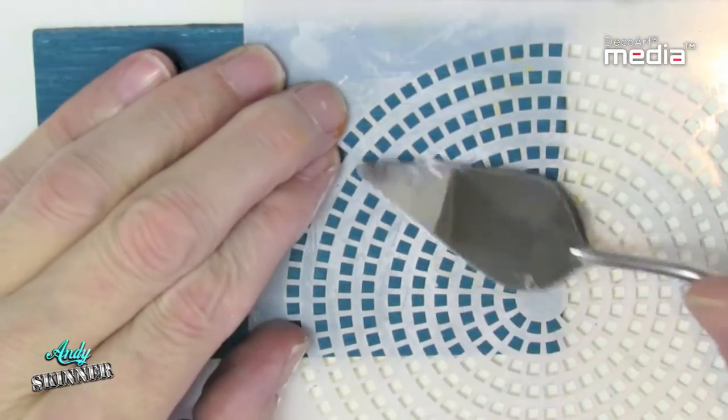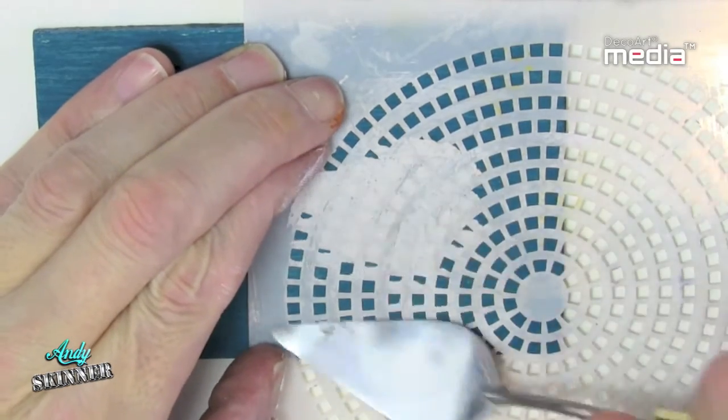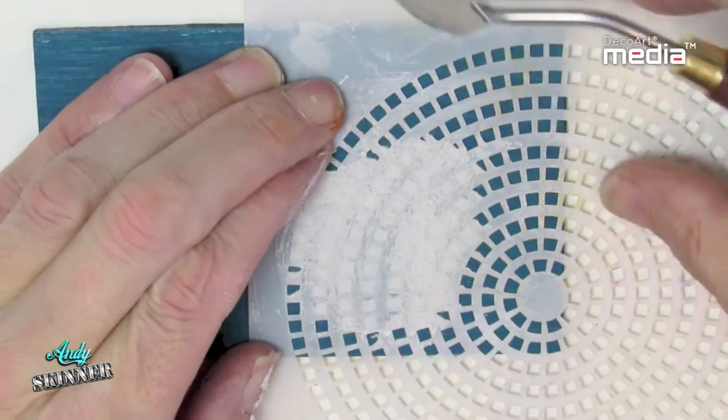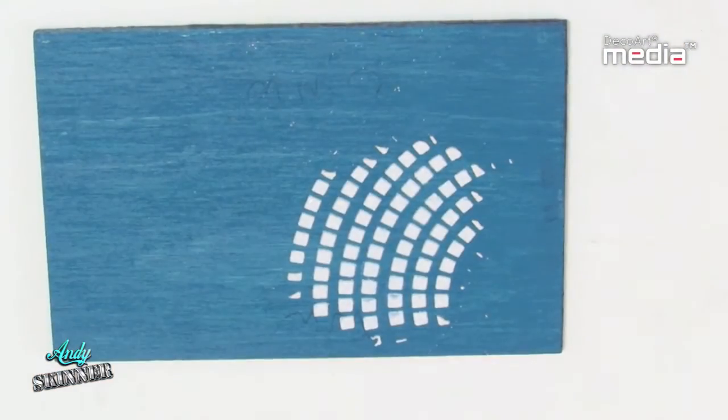It's very effective when using with a stencil. Simply scrape it through a stencil using a palette knife. Remove the stencil while the paste is still wet and allow to dry.